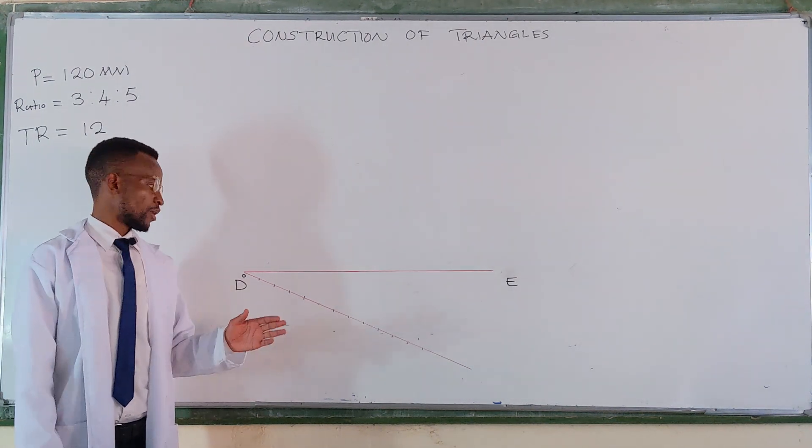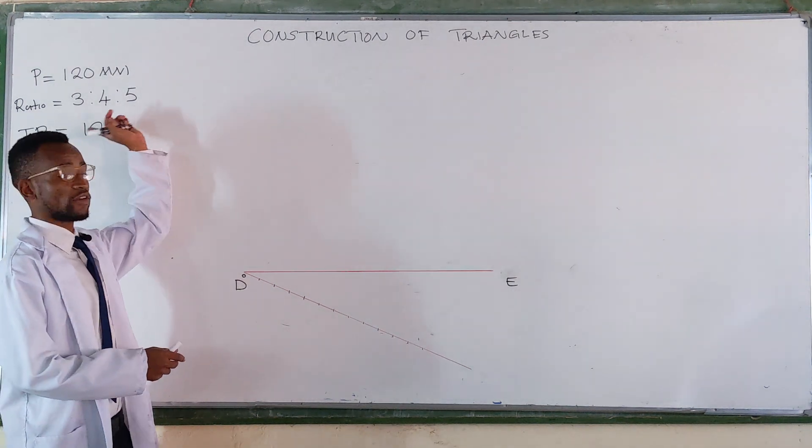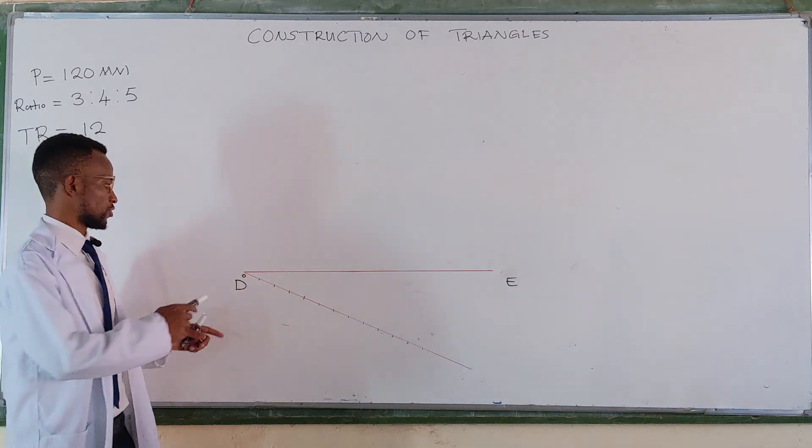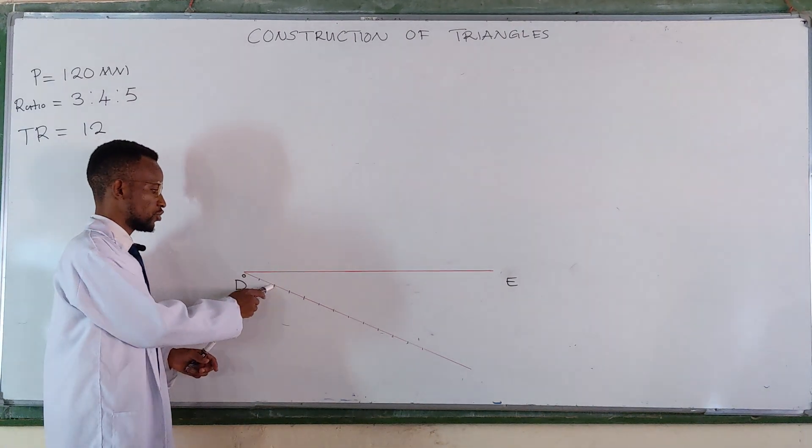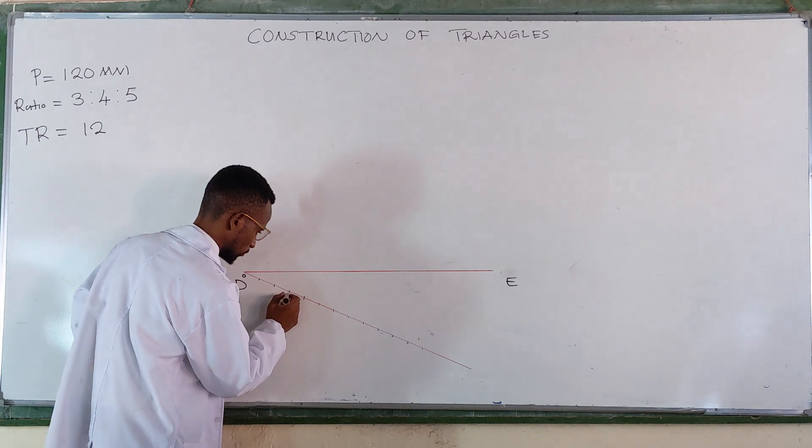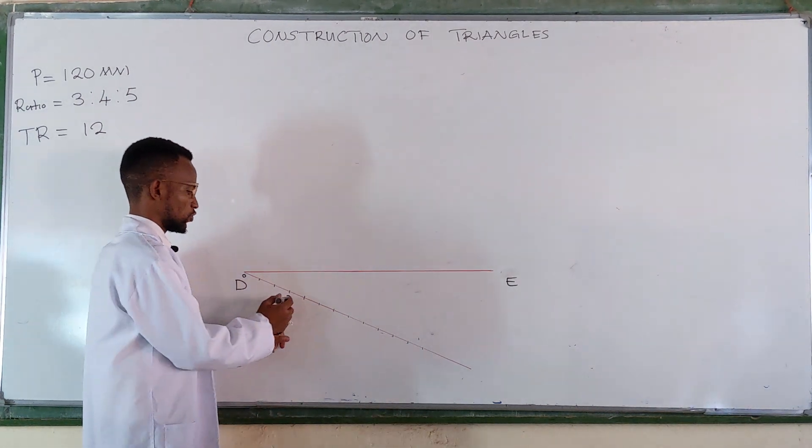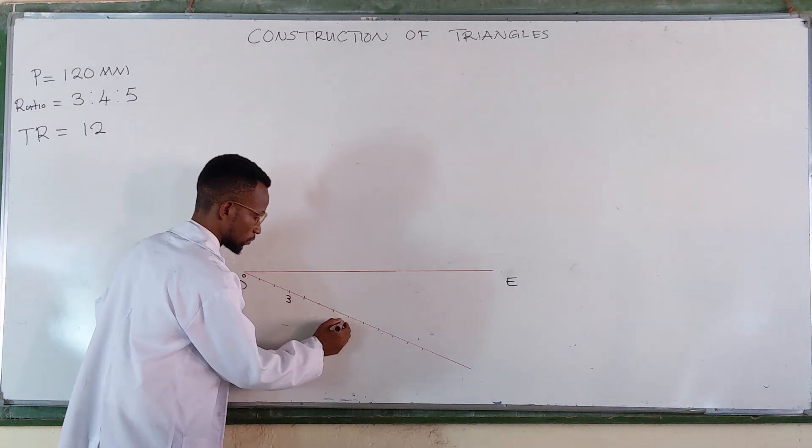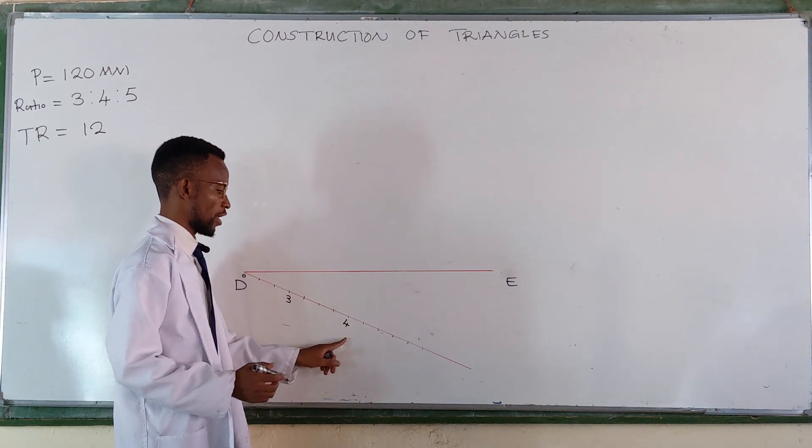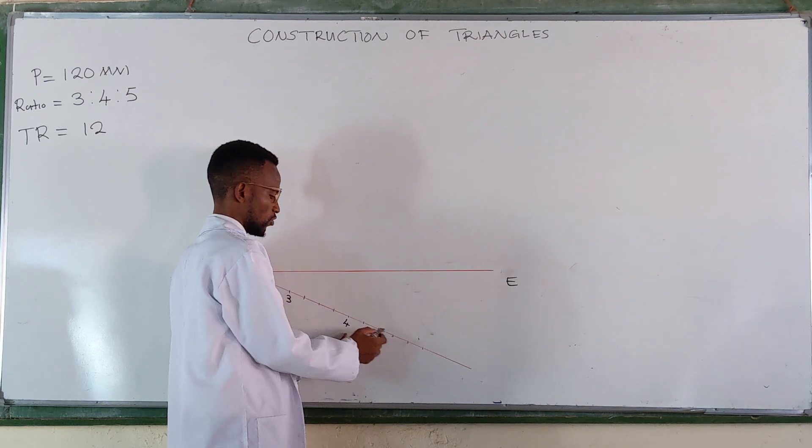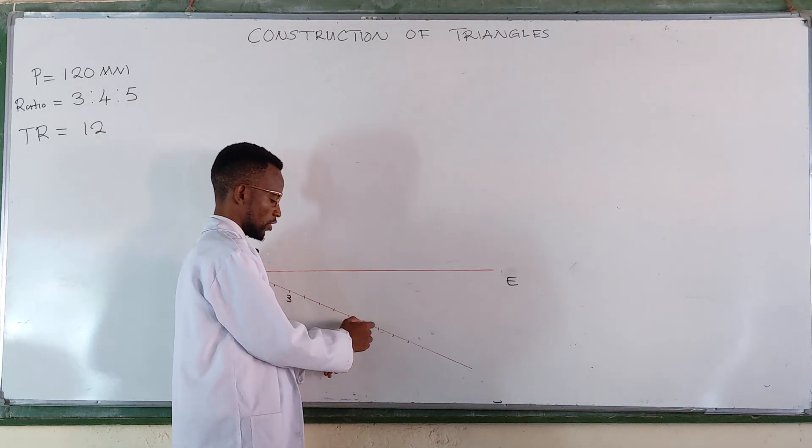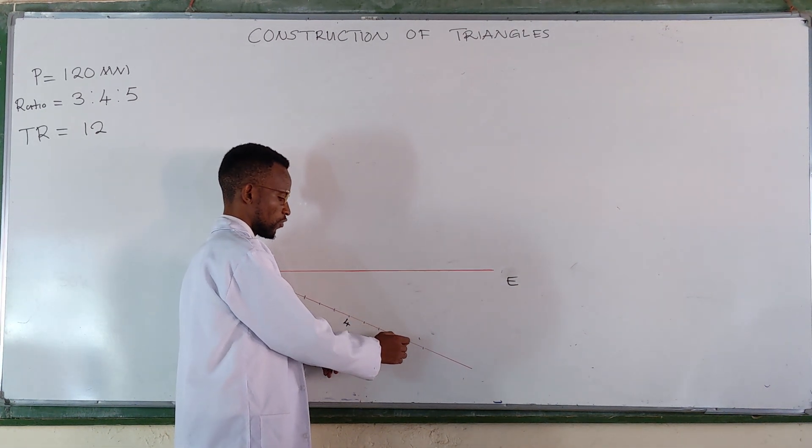After making the 12 equal marks, you number them in this manner according to the given ratio. From zero there, you're going to have one, two, three. And then from three, you're going to have one, two, three, four. And then the last one should be 0.5 because from four you're going to have one, two, three, four, five.